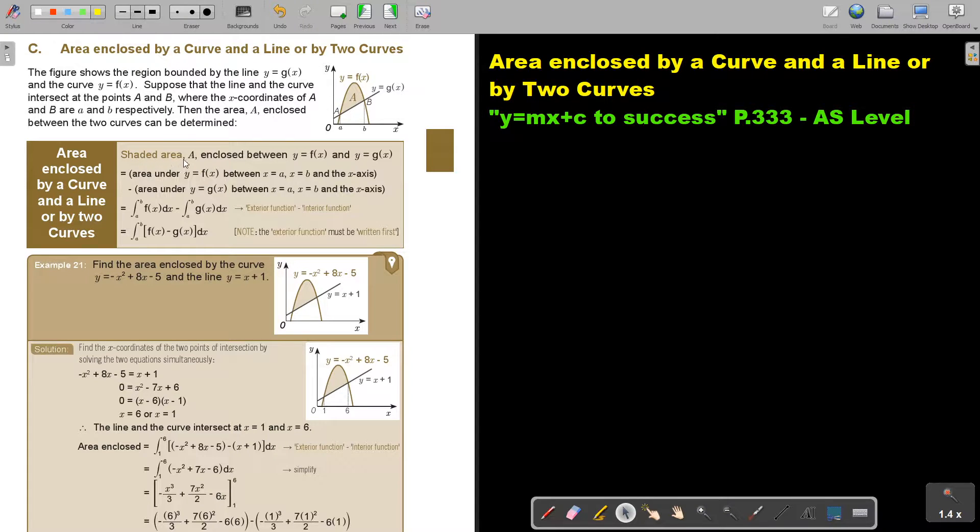So the shaded area A enclosed by Y equals FX and Y equals GX is the area underneath Y equals FX, the one that's on top, minus the area underneath GX. So you subtract. You take actually that whole area and then you subtract that area and then you're left with that one.